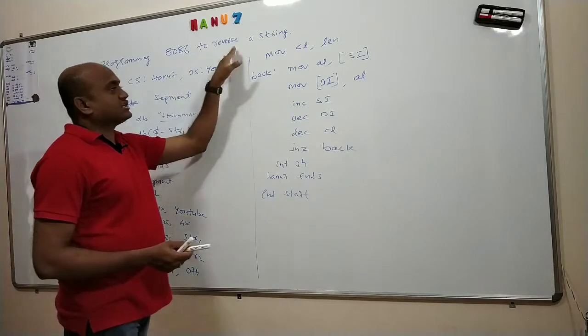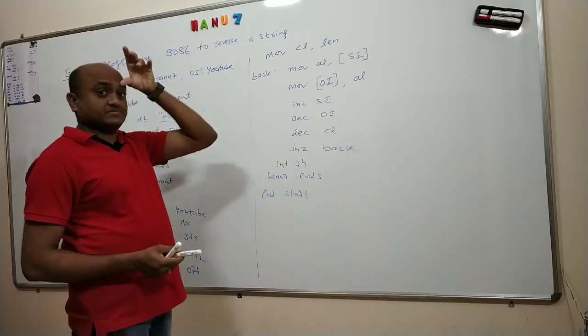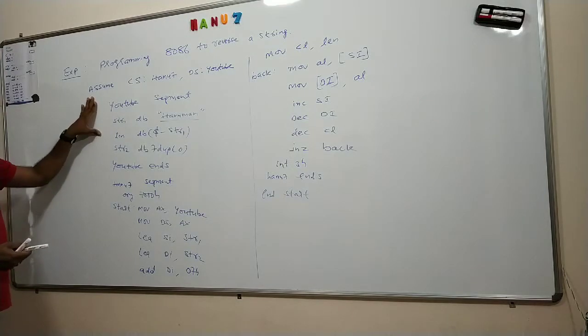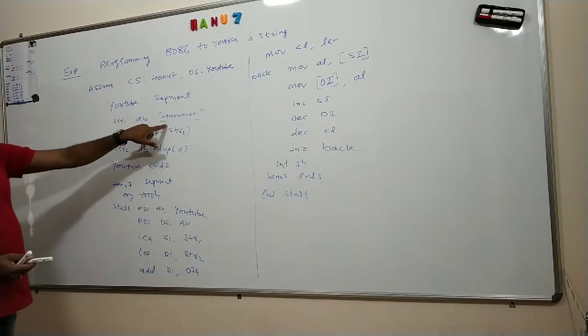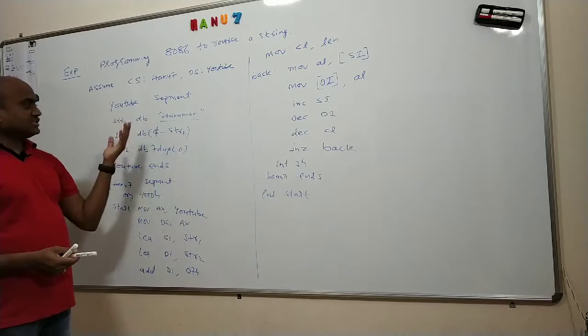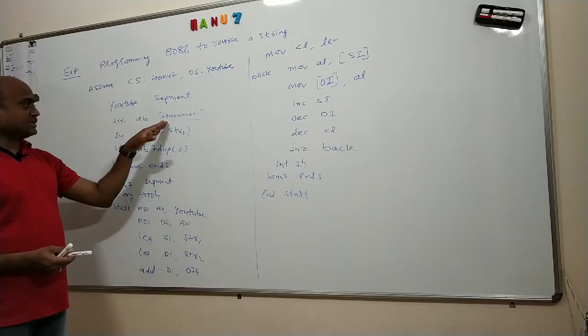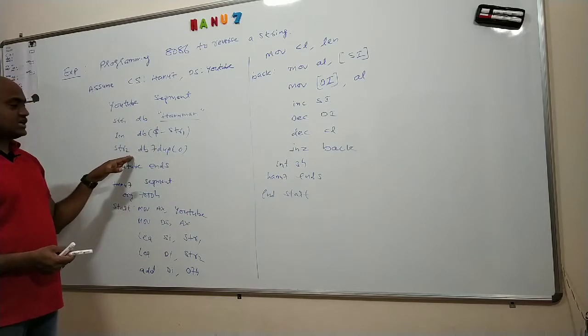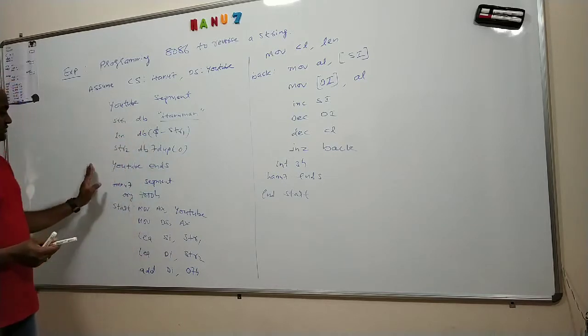Programming 8086 to reverse a given string. As usual, create a data segment. This is the input string I have with me, same like the moving string. I defined my input string, calculated the length of the string. I created 7 duplicate values where I want to see the reverse of this string, and then I created core segment.